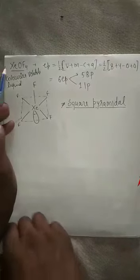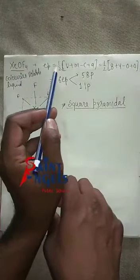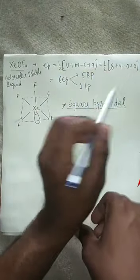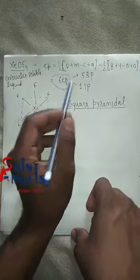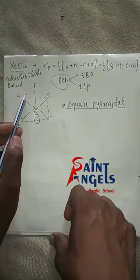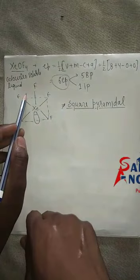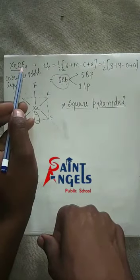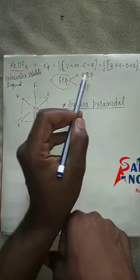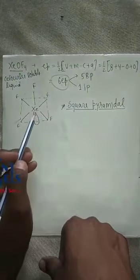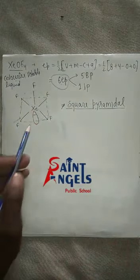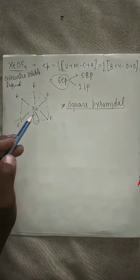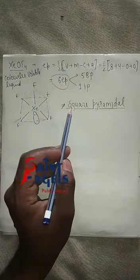For XeOF4: electron pairs = half(8 + 4) = 6. For 6 electron pairs, the geometry is octahedral. Out of 6 electron pairs, 5 are bond pairs and 1 is a lone pair. When we place one lone pair in the octahedral arrangement, the shape becomes square pyramidal. So XeOF4 has a square pyramidal shape.